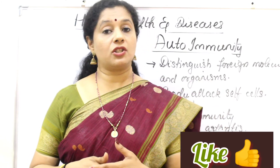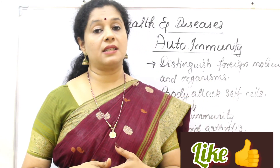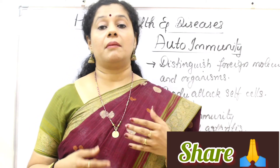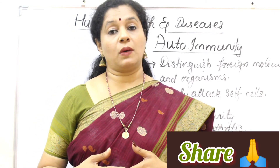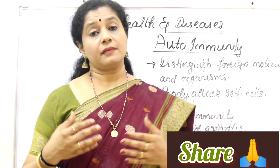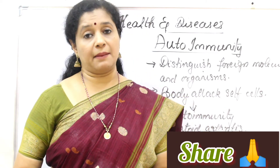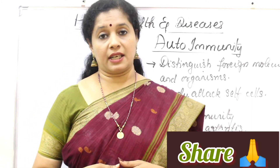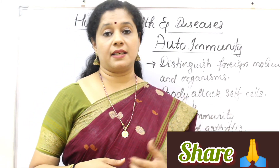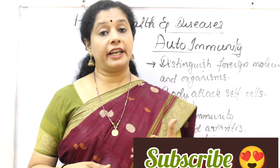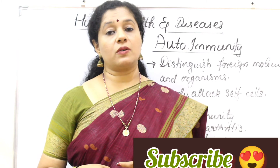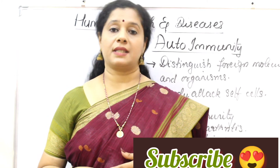The condition in which our immune system attacks our own cells is called autoimmune disease. There are more than 80 kinds of autoimmune diseases reported. The most common ones are type 1 diabetes, rheumatoid arthritis, Addison's disease, Grave's disease, multiple sclerosis, lupus, etc.